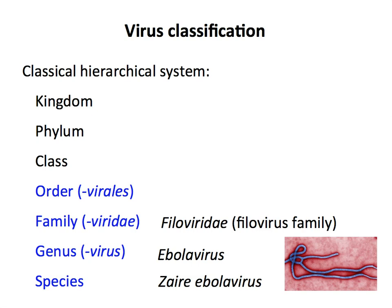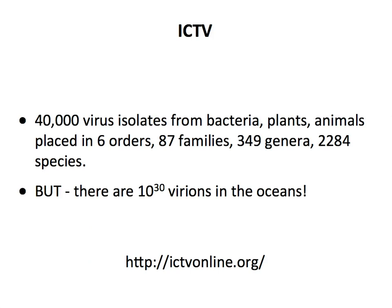There is an organization called the International Committee on the Taxonomy of Viruses, which meets yearly and decides how viruses should be classified. So far they have classified 40,000 different viruses from all sorts of living things into six orders, families, genera, and species. But this is just a drop in the bucket — because remember, there are 10 to the 30 bacteriophages in the ocean alone, and the ICTV has only made a dent in that. As we do faster, more massive genome sequencing, we discover more and more viruses, which makes classification even harder.